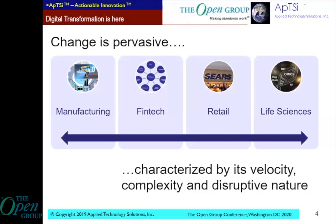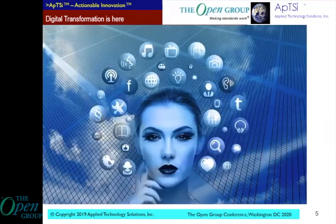Change is characterized by its velocity — it's extremely rapid. Business models change, standards change. It's characterized by its complexity as we move to new technology platforms and evolving relationships. Organizations have to change their people, process, and technology to deal with this. Because as we talk about velocity, complexity, and disruptiveness, traditional business models and traditional security models will change.